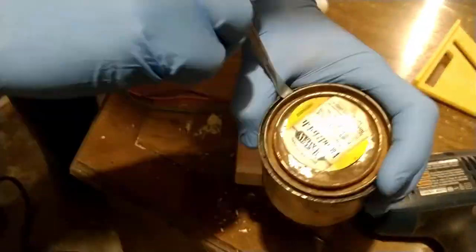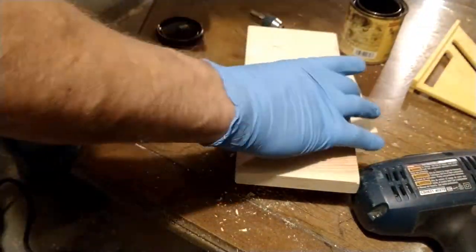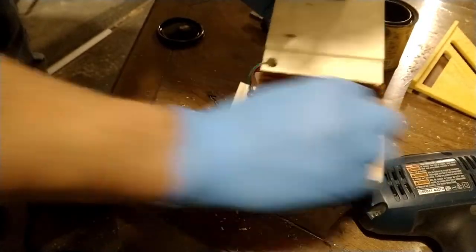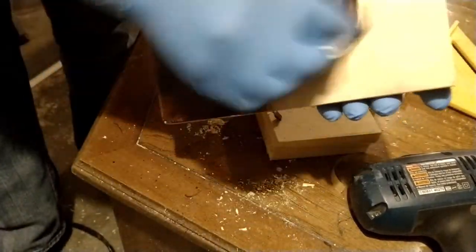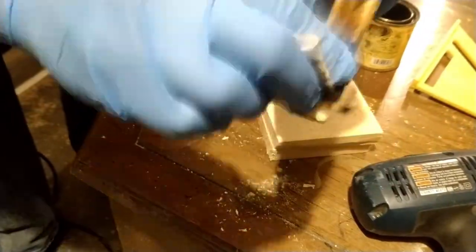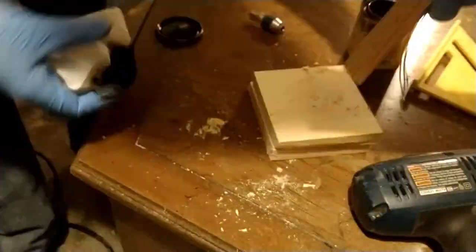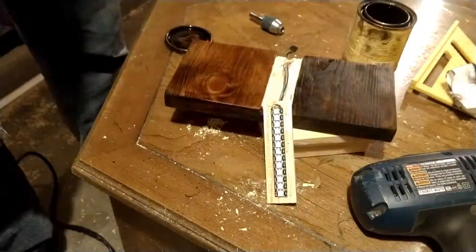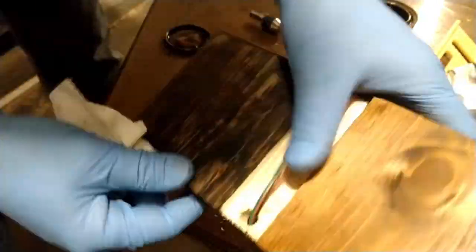I decided to use a dark walnut stain here to match the interior decoration of my house. Obviously you can use whatever sort of finish suits your home decor. I like to just take a small piece of a paper towel, about a quarter of a full sheet, wipe the stain all over each side, and then clean off the excess with a clean paper towel. I found this method really gives me a nice even coat that really highlights the features of the wood.